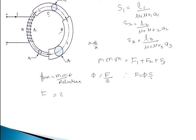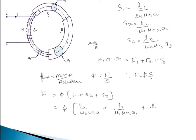So we can write F = φ × (S1 + S2 + S3). Substituting the reluctance values: F = φ × [L1/(μ₀μr1·A1) + L2/(μ₀μr2·A2) + L3/(μ₀μr3·A3)]. Now using the formula for flux density B = φ/A, we substitute φ to get: F = φL1/(μ₀μr1·A1) + φL2/(μ₀μr2·A2) + φL3/(μ₀μr3·A3).